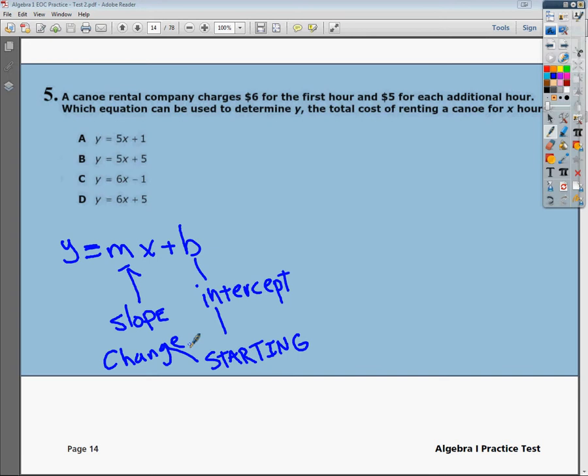So, the part that represents change would be the $5 for additional hours. So, per hour. That part represents change. So, when I rewrite my statement, my change portion is going to be 5. And that goes in front of the X.